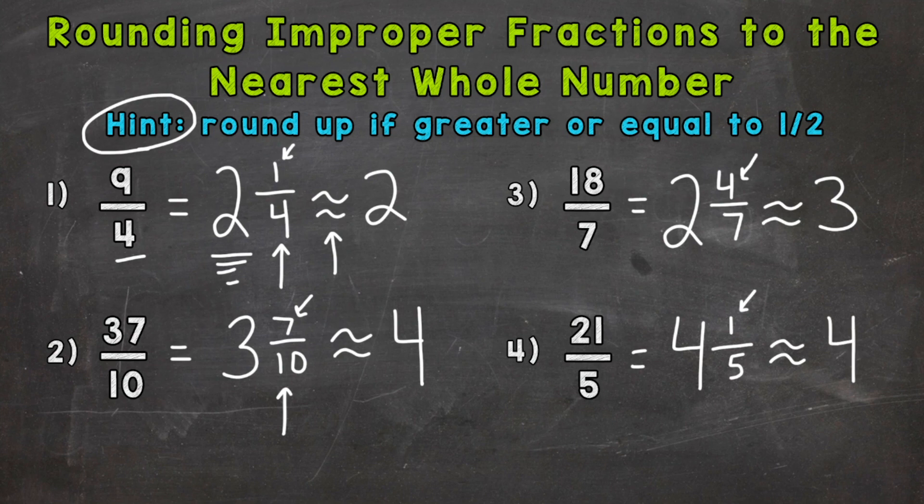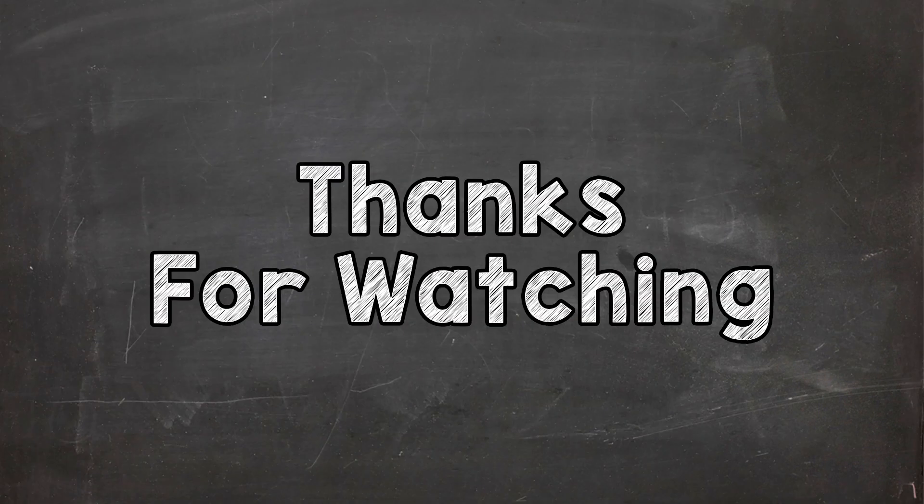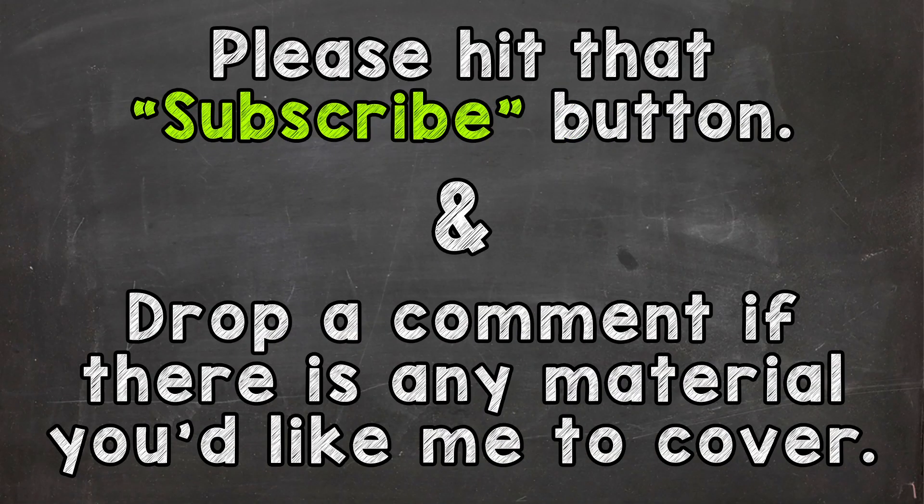So there you have it. There's how you round improper fractions to the nearest whole number. Convert to a mixed number, and then take a look at that fractional part of the mixed number. Greater or equal to a half, round up. If it's less than a half, then keep that whole number the same. Now, if you need a little more help with converting improper fractions to mixed numbers, I have a separate video on that. I drop that link down in the description. I hope this helped. Thanks so much for watching. Until next time, peace.